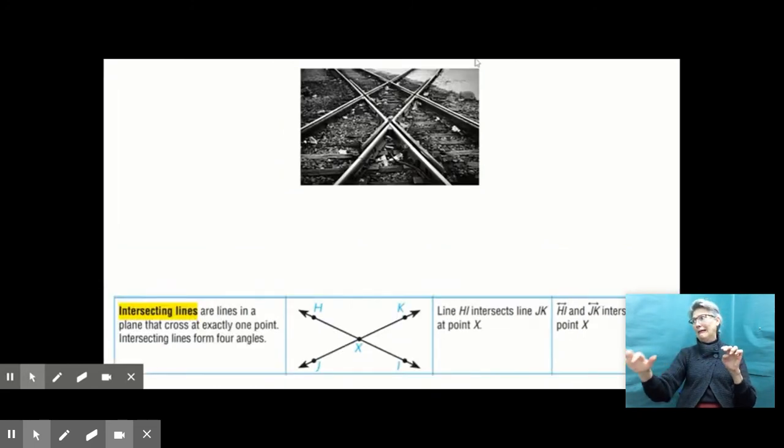And my last picture here. These were my other train tracks, and this shows intersecting lines. Intersecting lines are lines on a plane that cross at exactly one point. Intersecting lines form four angles. You'll notice the difference between intersecting and perpendicular is that intersecting lines form four angles. Perpendicular lines form four right angles.